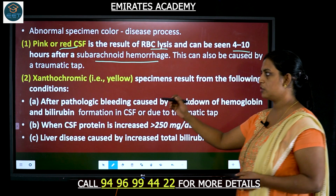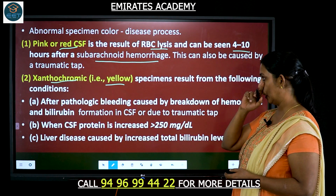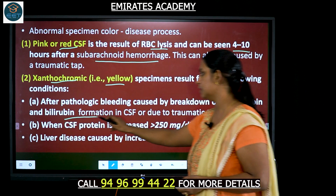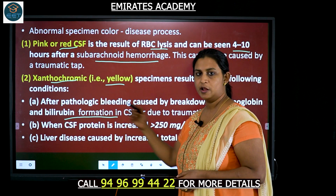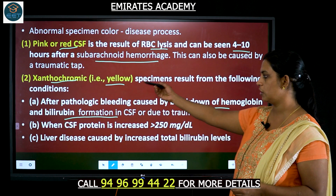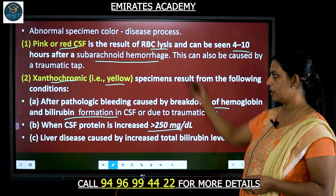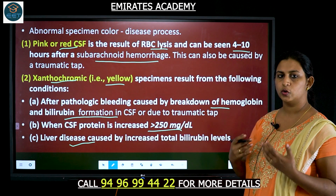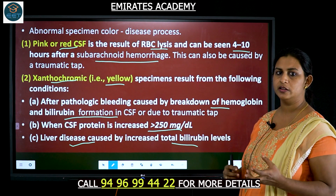If the CSF is yellow in color, the term used is xanthochromic. The conditions that cause yellow color include bilirubin formation in CSF due to the breakdown of hemoglobin caused by bleeding. If the proteins in CSF are more than 250 mg per deciliter, that will also lead to yellow color. Or it could be due to liver disease in which the total bilirubin level is high.